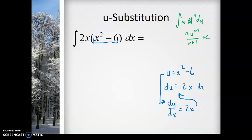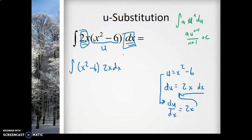In my problem I already have 2x dx, so that part is just du. And x² - 6 is just u. I'll switch the order and rewrite it as the integral of (x² - 6)(2x dx). Now substituting: the integral of u · du. This matches the power rule formula, so I can take the integral. The integral of u (which is u¹) becomes u²/2 + C.